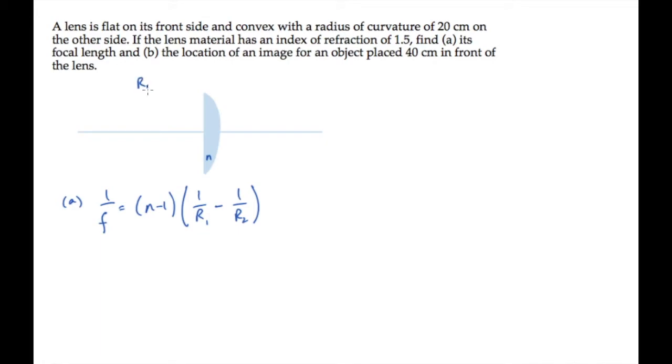That surface is flat, so it has an infinite radius of curvature, and r2 is the curvature of the back side. That surface has a radius of curvature of magnitude 20 centimeters, and it's negative because the sign convention is that the radius of curvature is negative when the center faces the object, which I'll draw over here to the left.